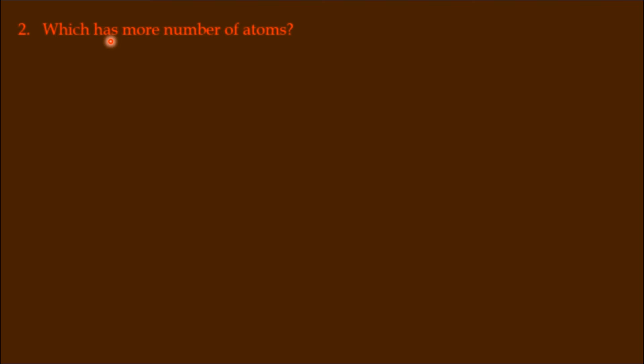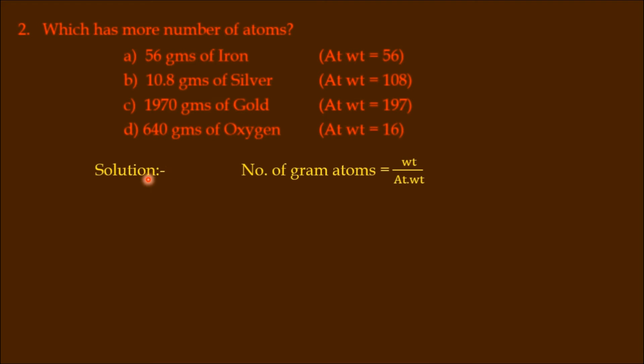Question number 2: which has more number of atoms? Options are given: 56 grams of iron (atomic weight = 56), 10.8 grams of silver (atomic weight = 108), 1970 grams of gold (atomic weight = 197), 640 grams of oxygen (atomic weight = 16). Atomic weights have been provided. How do you get number of gram atoms? Weight in grams by atomic weight.